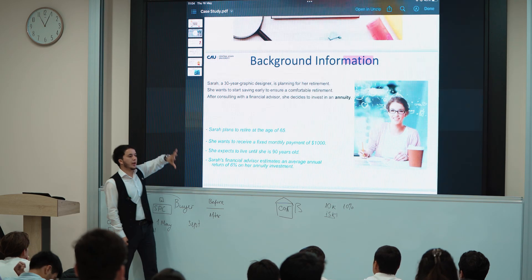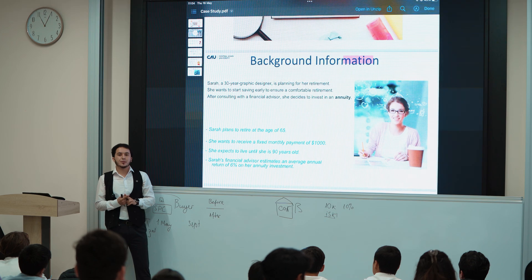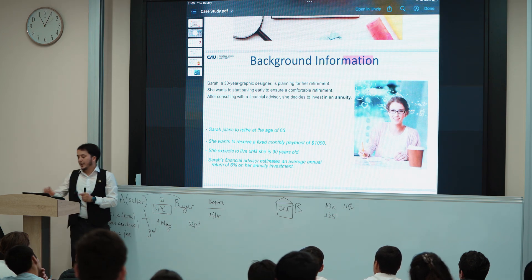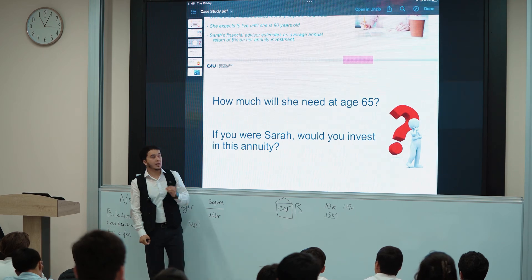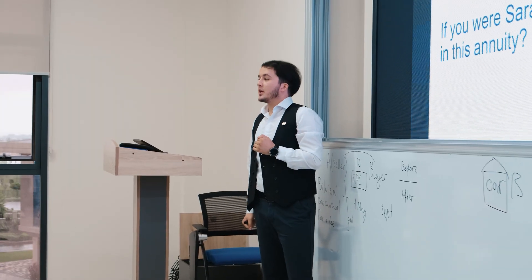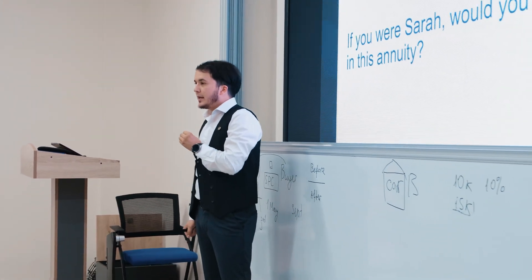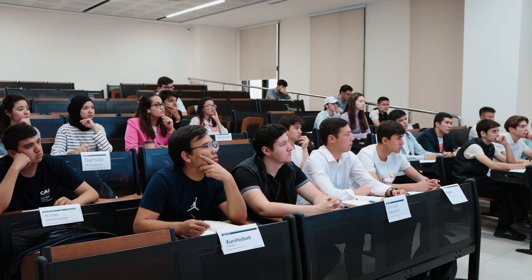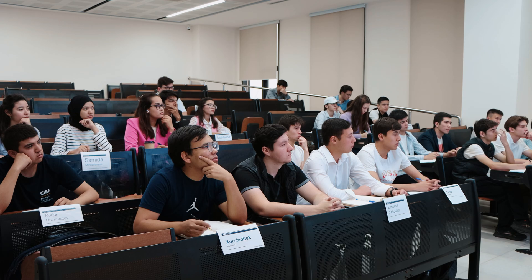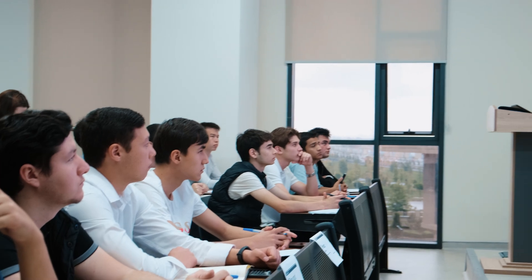Based on the given information we have two main questions. The first question, based on your financial analysis skills and critical thinking: how much will she need at age 65? How much money should she invest in an annuity so that she will have $1,000 US dollars every month until she's 90 years old?